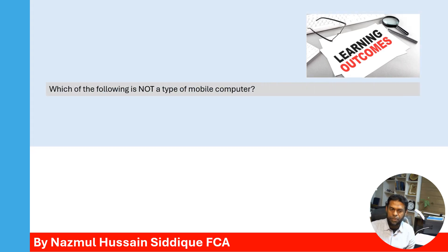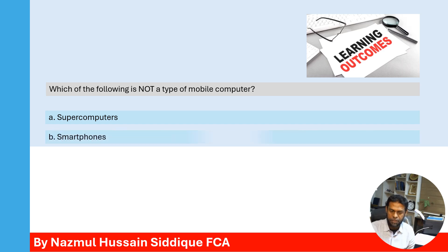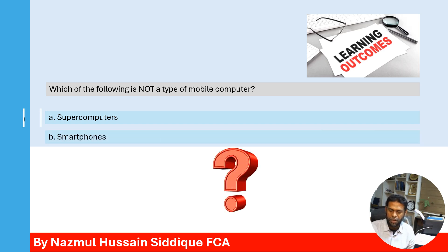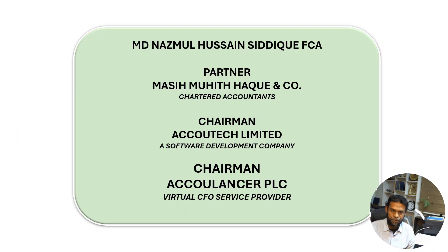Question 5: Which of the following is not a type of mobile computer? Option A — supercomputers. Option B — smartphones. Supercomputers are not a type of mobile computer. That's the end of this episode.